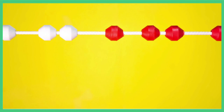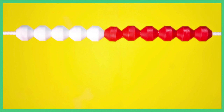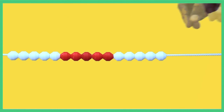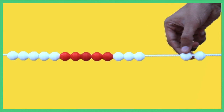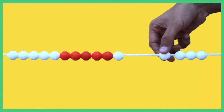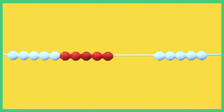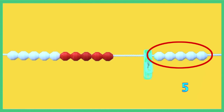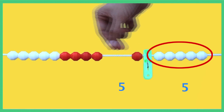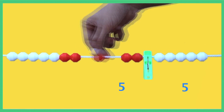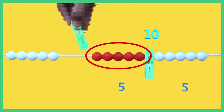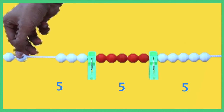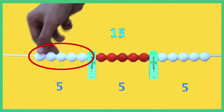The number line can also be used to explain multiplication. Let students try skip counting by fives. For example, place a clip after every five beads. Count aloud: 1 times 5 is 5, 2 times 5 is 10, 3 times 5 is 15, and so on.